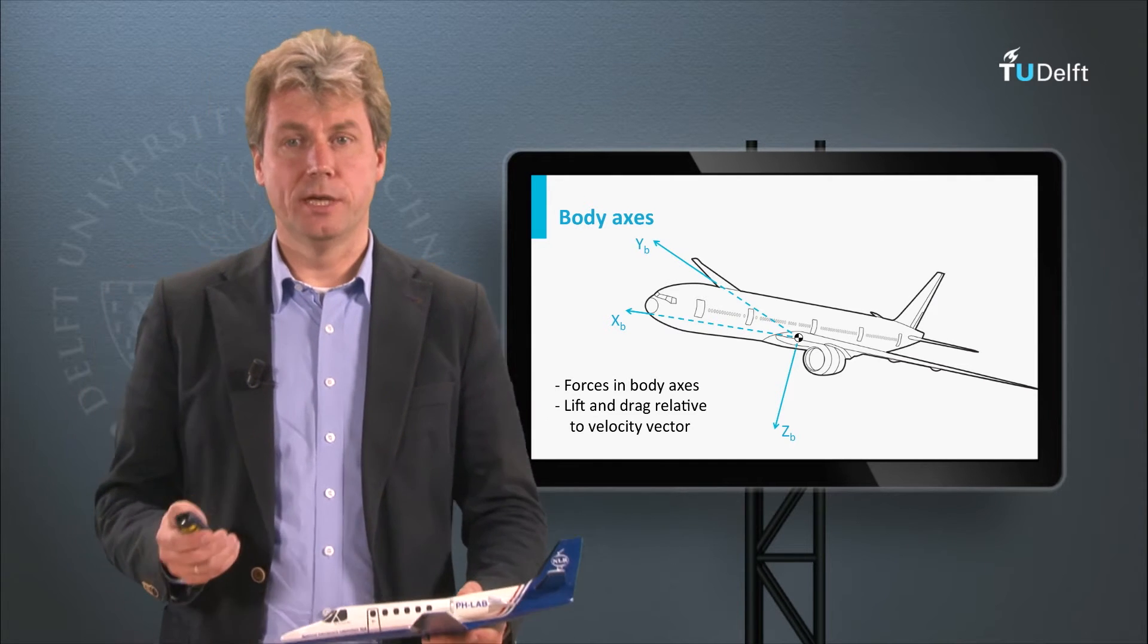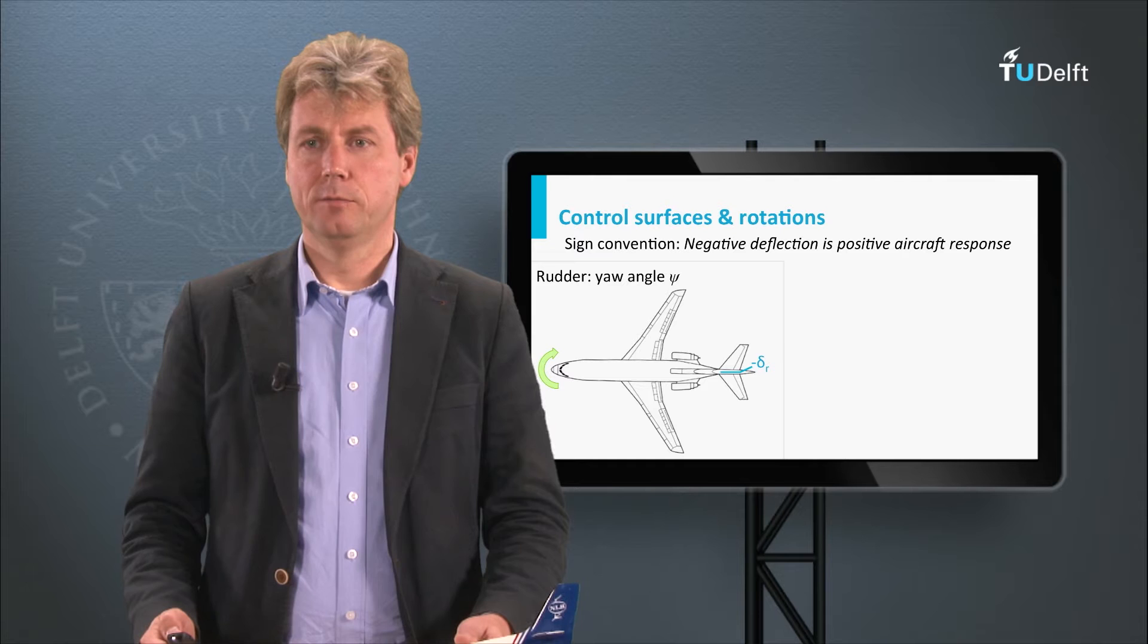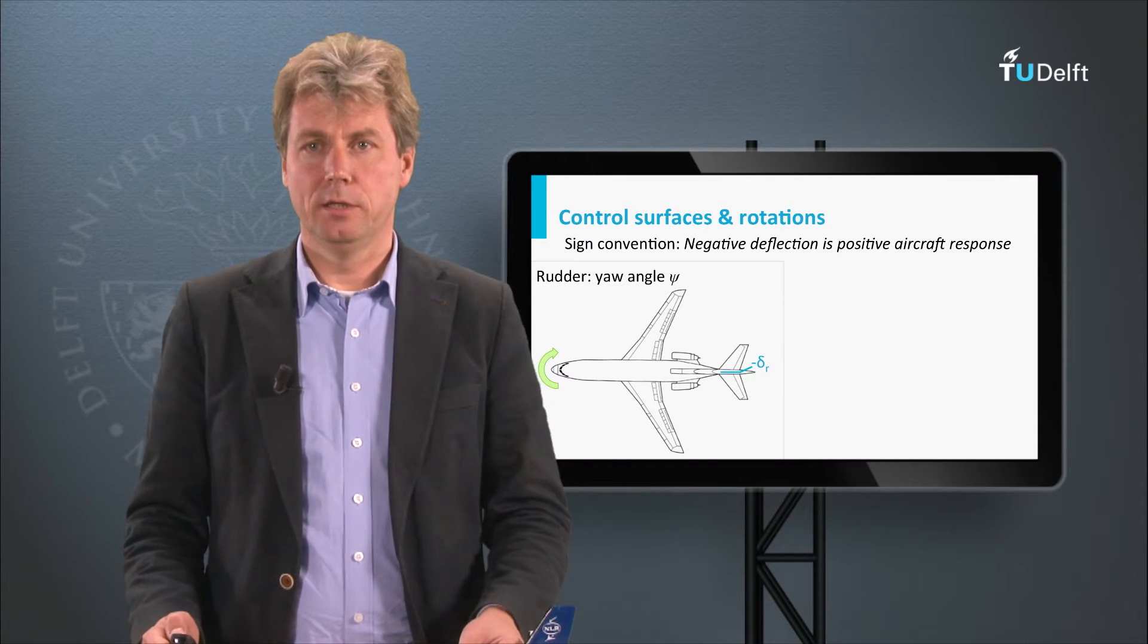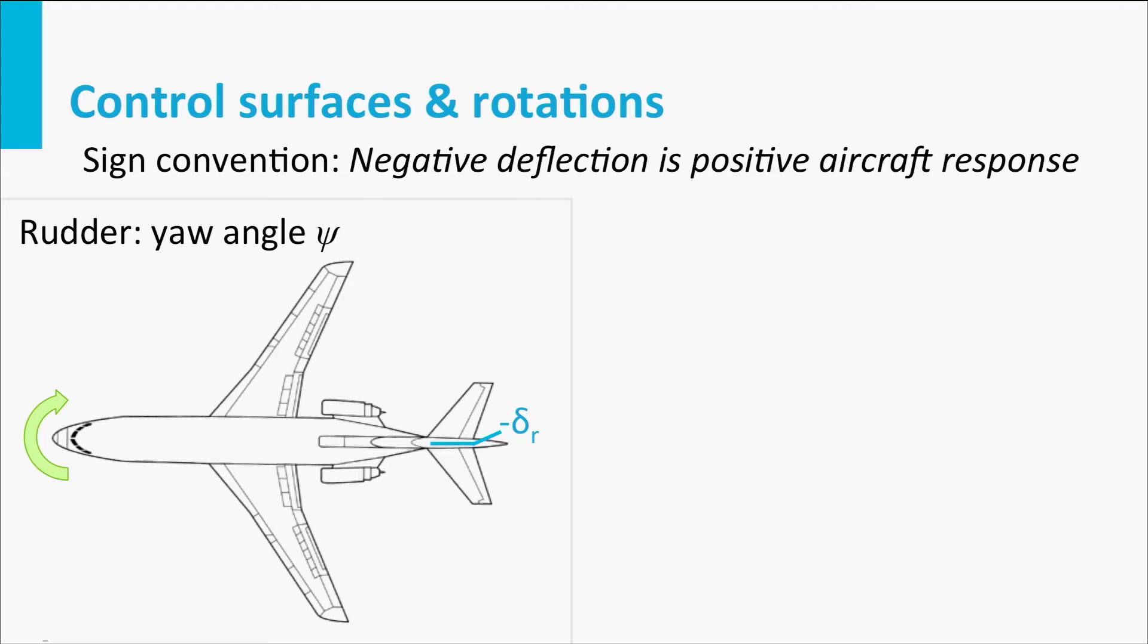If we look at the symbols that we use for these movements, then here we see the rudder causing the yaw angle, Psi, and you also see the sign here shown if it is extended to the starboard side. It has a negative sign, but it results in a positive yawing angle, Psi. And that is sort of standard for the sign convention of these control surfaces, a negative extension results in a positive angle response. So the yawing angle, we use the symbol Psi, it is controlled with the rudder, which we call delta R.